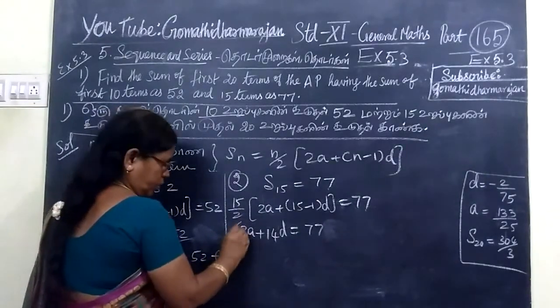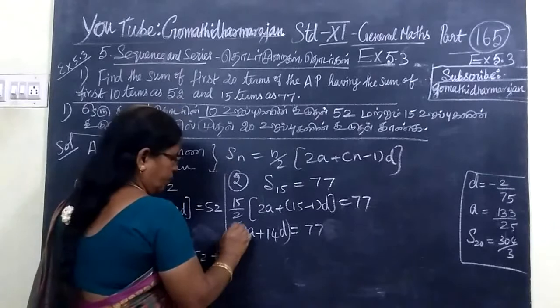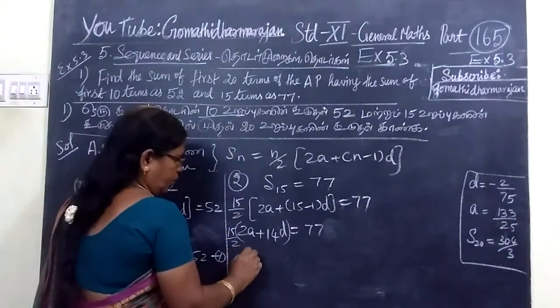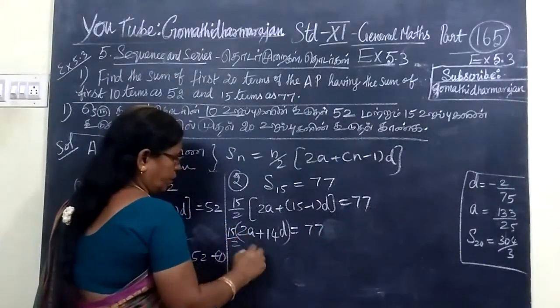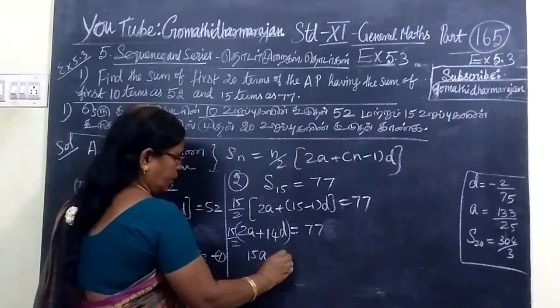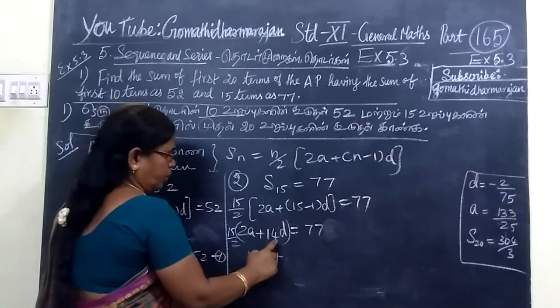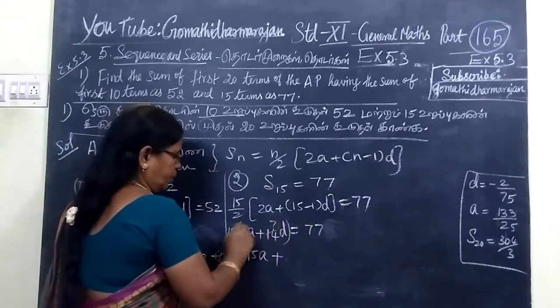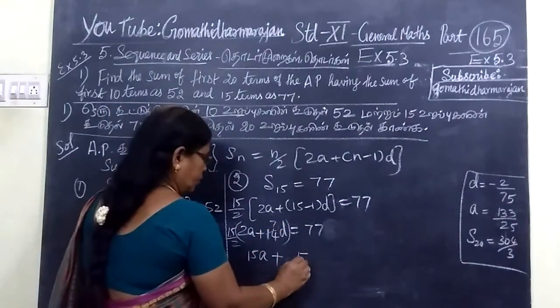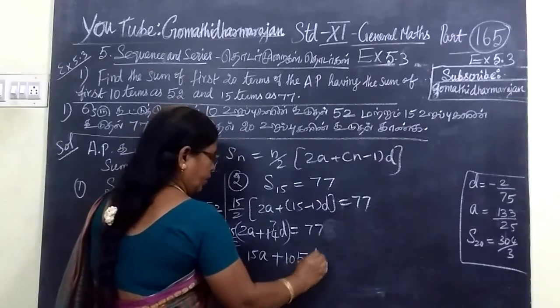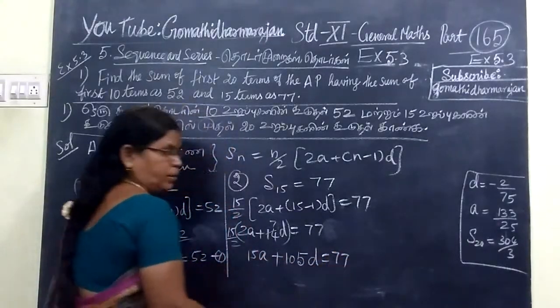So, 15 by 2 you take inside. 15A plus 105D. So, this 7 has to multiply by 15. So, 15A plus 105D equal to 77.